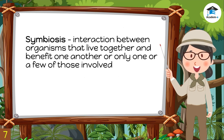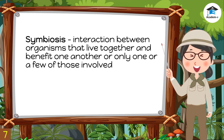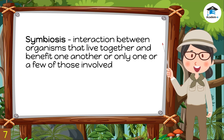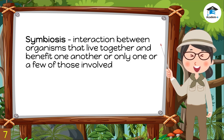In an ecosystem, the interaction between organisms that live together and benefit one another — or where only one or a few of those involved benefit — is called symbiosis. It has three kinds: mutualism, commensalism, and parasitism.